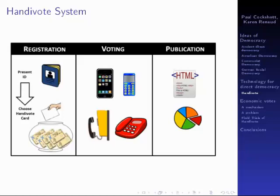We call our system HandyVote, after the German term for a mobile phone. You start off by registering to vote. Any voting system needs a registration procedure to ensure that only eligible voters vote and that people only have the opportunity to vote once. This is done by people getting a voting card, but the way they get the voting card has to be randomised. The simplest way to randomise it would be: when you go to register to vote, you put your hand in a jar and pull out a voting card in a sealed envelope, so no one knows which voting card and which voter's number you've got.